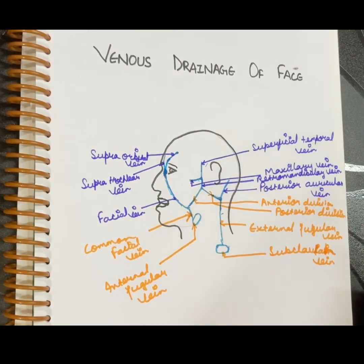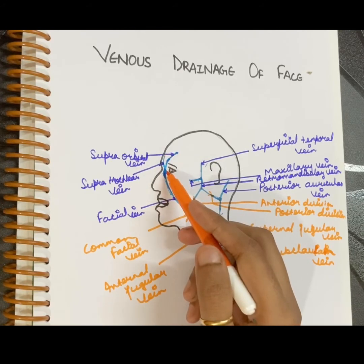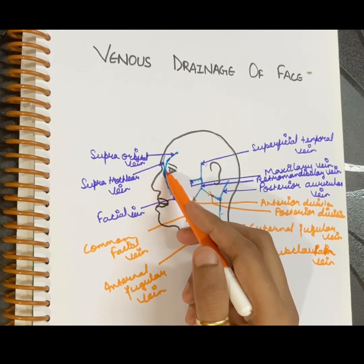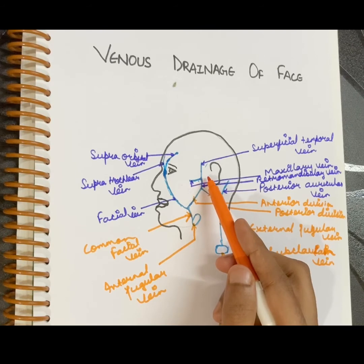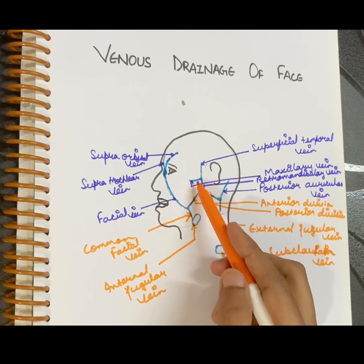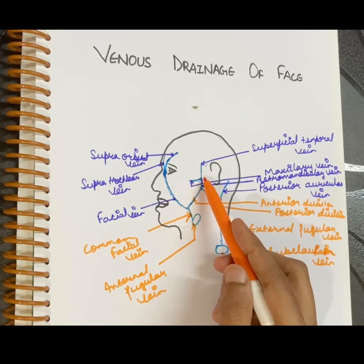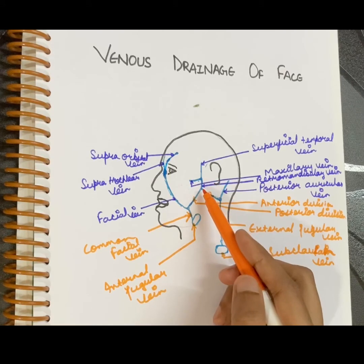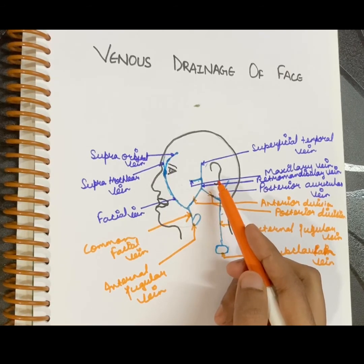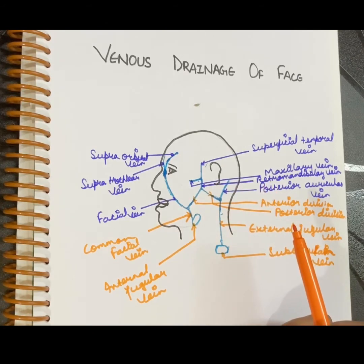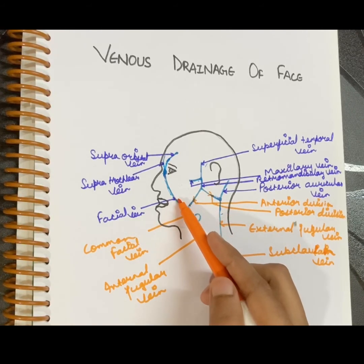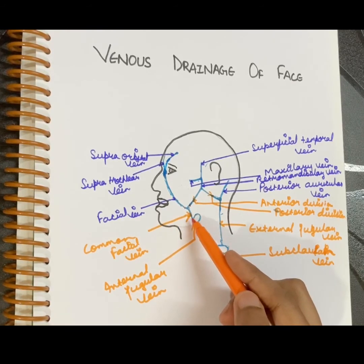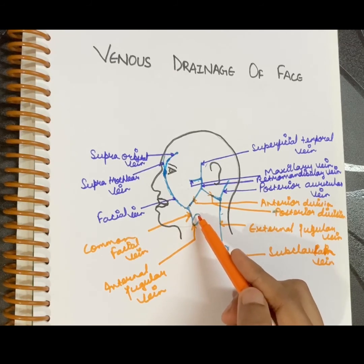In summary, the supraorbital and supratrochlear veins unite at the medial angle of the eye to form the angular vein, which continues as the facial vein. The superficial temporal vein descends in front of the tragus of the ear and enters the parotid gland, where it unites with the maxillary vein to form the retromandibular vein. This vein gives two divisions: the anterior division unites with the facial vein to form the common facial vein, which drains into the internal jugular vein; the posterior division joins the posterior auricular vein to form the external jugular vein, which drains into the subclavian vein.